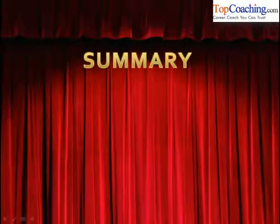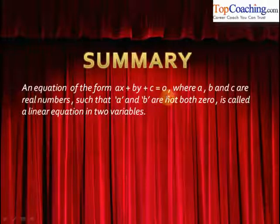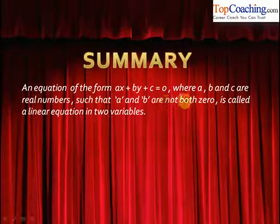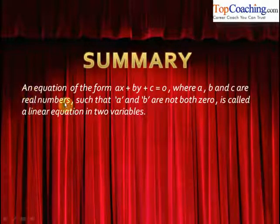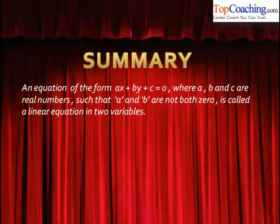It's time to summarize all the important points we have studied in this chapter. An equation of the form ax + by + c = 0, where a, b, and c are real numbers such that a and b are not both zero simultaneously, is called a linear equation in two variables.